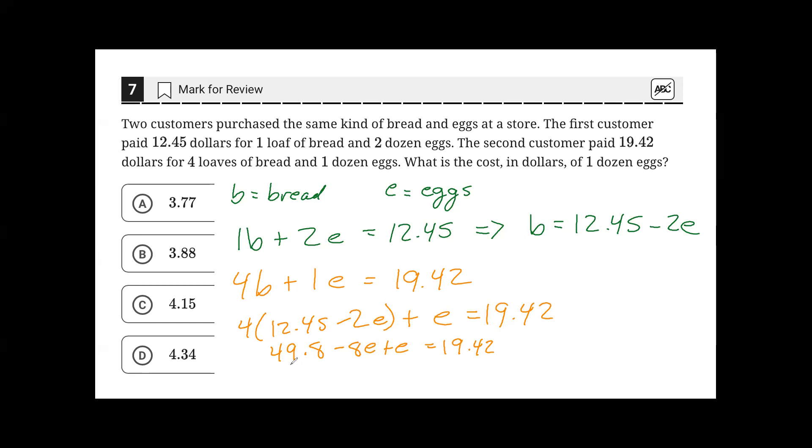Subtracting 49.8 from both sides and combining the E's simplifies the equation to minus 7E is equal to negative 30.38.